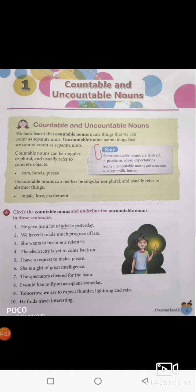She is a girl of great intelligence. Girl is a noun and girl can be counted — girl, girls, two girls, three girls. So girl is circled as a countable noun. Intelligence is a noun, and again it is underlined — it is an abstract noun, so it is an uncountable noun. Underline intelligence.